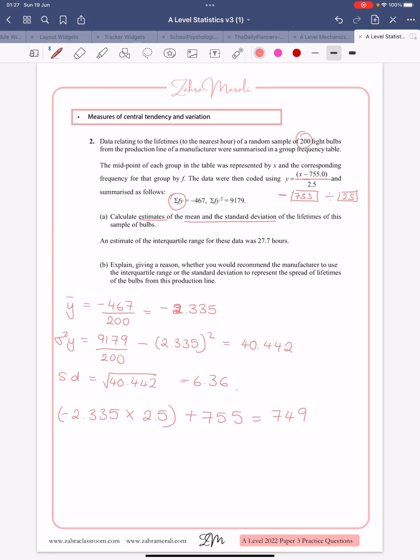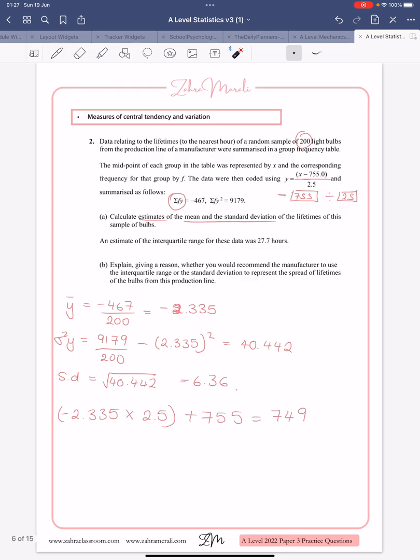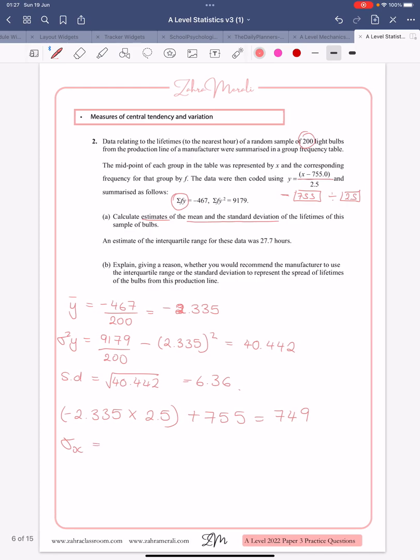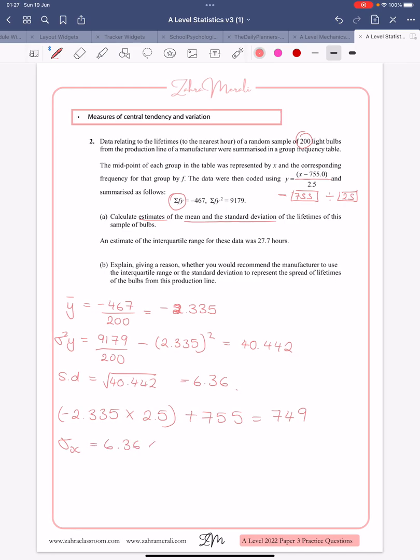For the standard deviation, however, it's only affected by multiplying or dividing by anything. So we don't do this minus bit here, or add it back, we're actually just going to take the 2.5. So your standard deviation of x is going to be your 6.36 multiplied by your 2.5, give you 15.9.